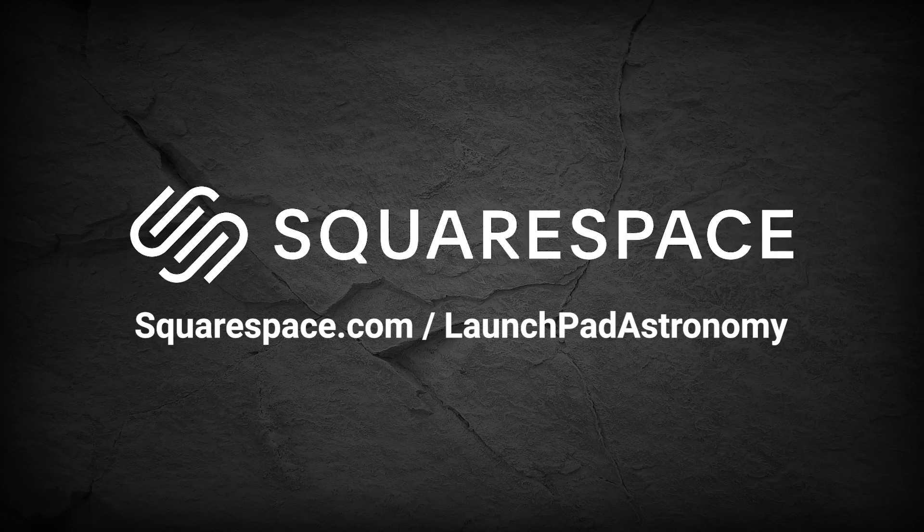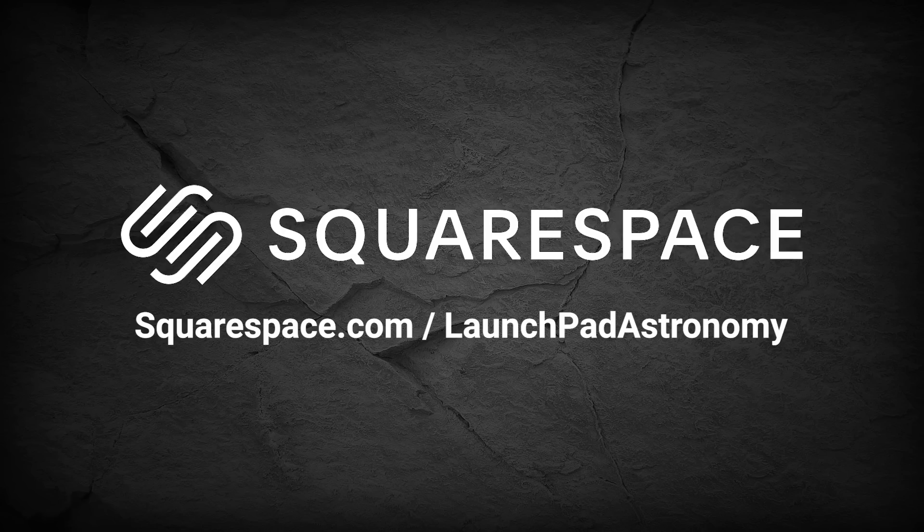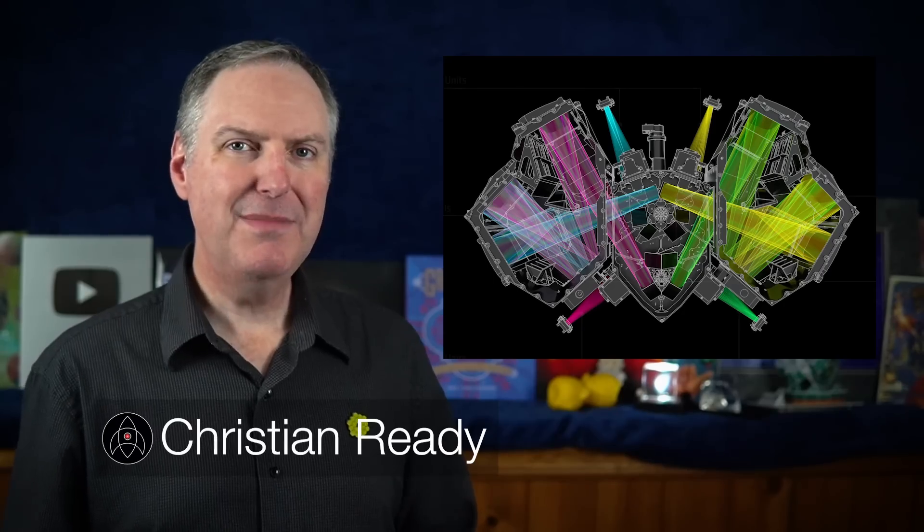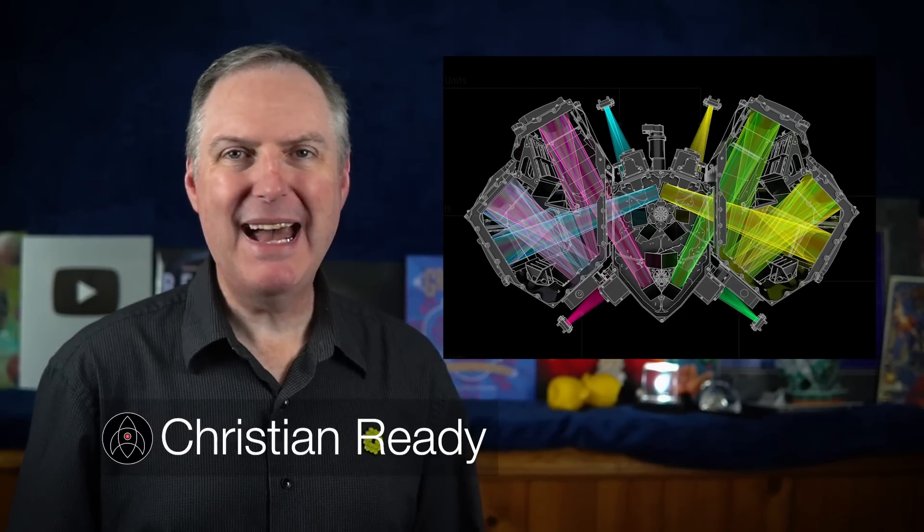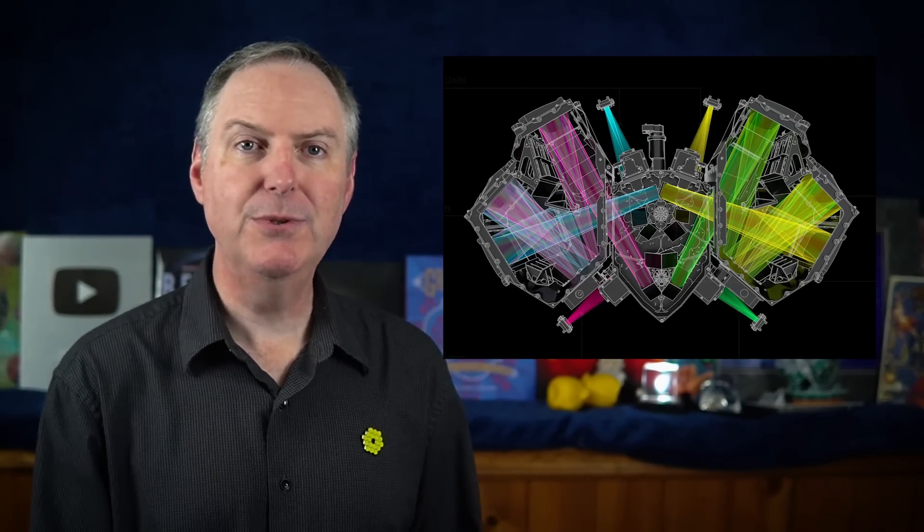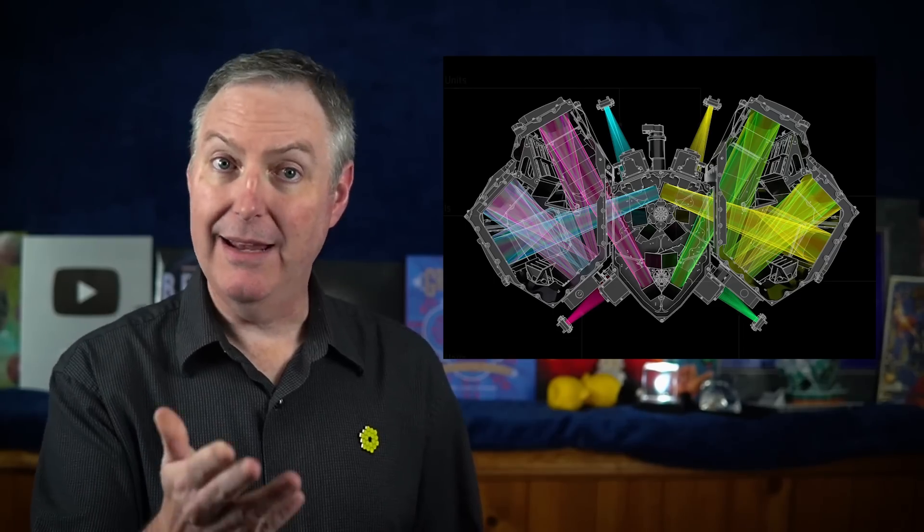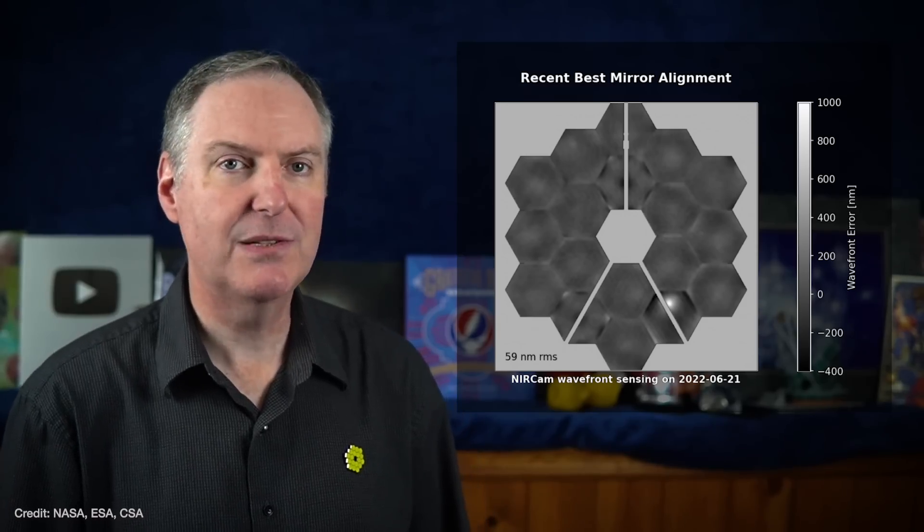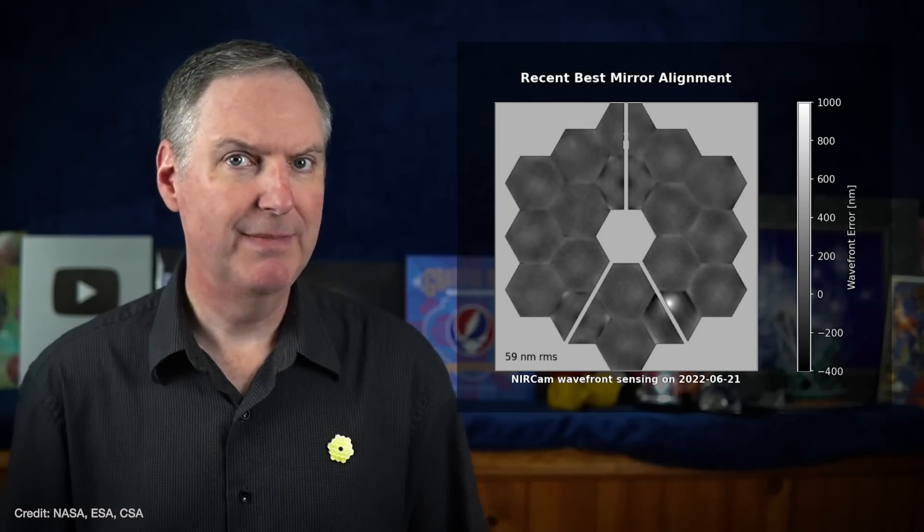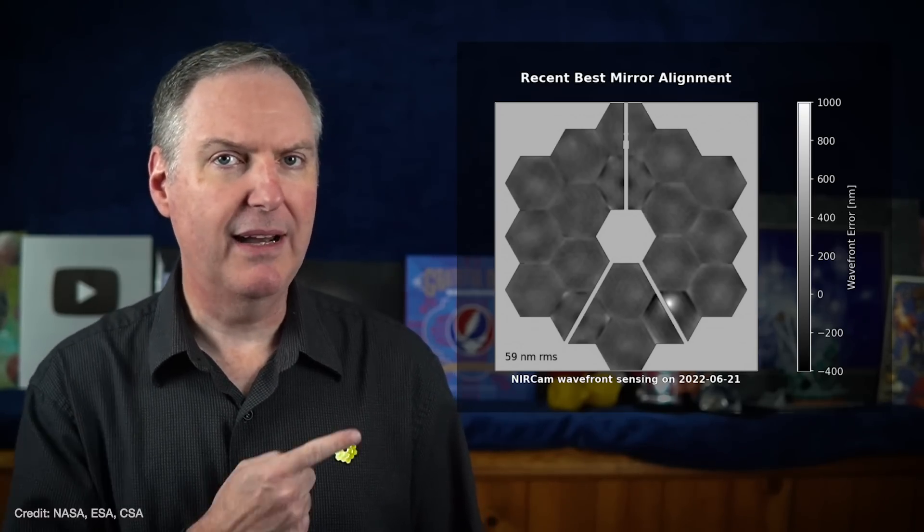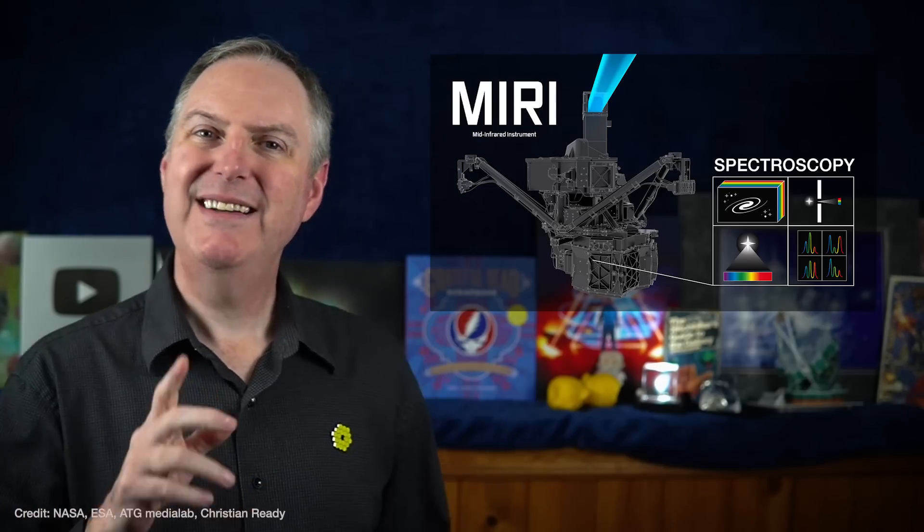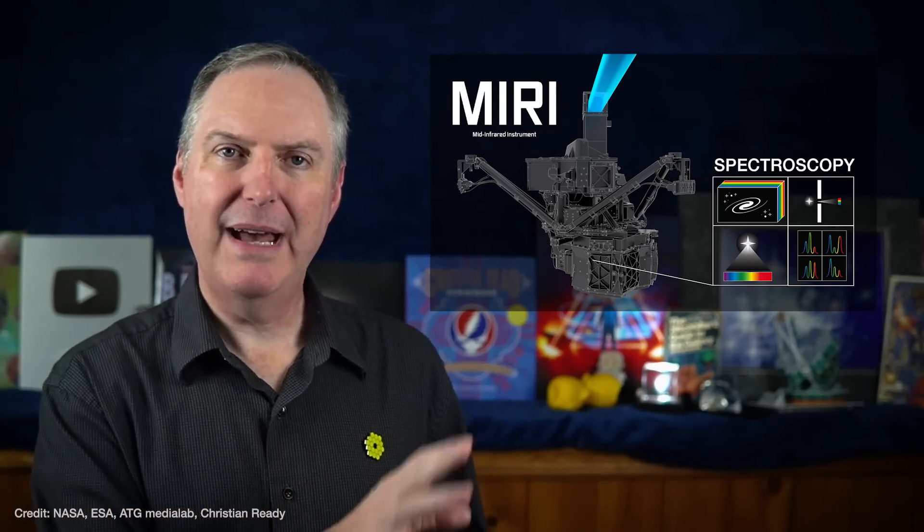This video is brought to you by Squarespace. Create a beautiful website without having to write a single line of code. The MIRI medium-resolution spectrograph is back in business, and that brings the James Webb Space Telescope back to full science capability. And a special working group has figured out a way to minimize the risk of micrometeoroid impacts. Short version, Webb will now look behind instead of forward. I'll explain that one in a bit, but first, let's talk about MIRI coming back into full service.